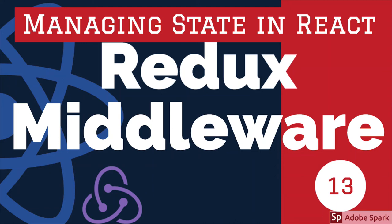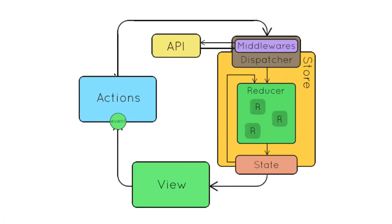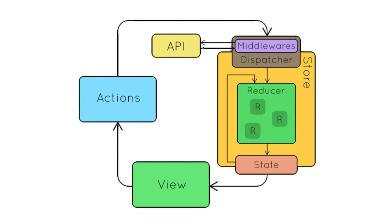Hi everyone and welcome back. In this video we are going to talk about an important component of React-Redux architecture, which is middleware. In our diagram — we have seen this earlier — we have added one more component here which is middleware. If we talk about simple Redux with React, it is purely synchronous. Synchronous means you will send an action with some data, your reducer will check what is the action type, based on the action type it will create a new state, and all the subscribers will receive the new state.